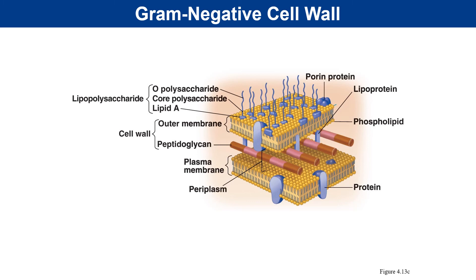Gram-negative bacteria have a much different cell wall with complex layering. We have a thin layer of peptidoglycan, and then the outer membrane on the upper surface with LPS — lipopolysaccharide. Within that LPS there are three components: the O polysaccharide, the core polysaccharide, and the most important to note — the toxic component called lipid A. Lipid A causes a lot of pathology and in some cases destabilization of a patient who can go into shock, in response to overwhelming amounts of gram-negative bacteria getting into a person's blood or organs.